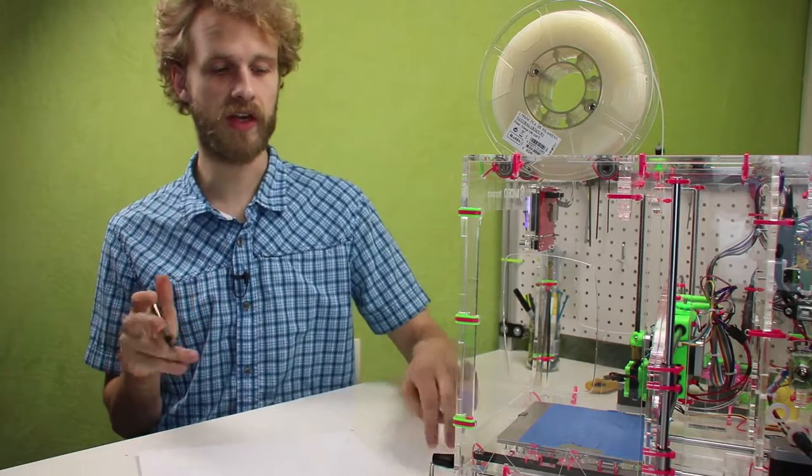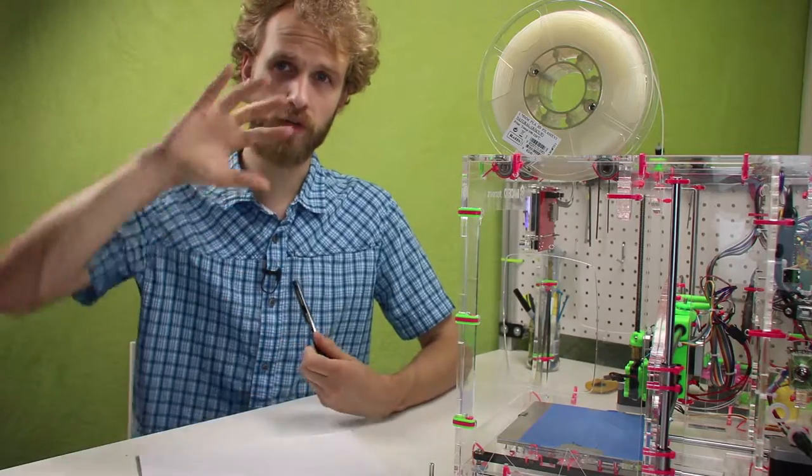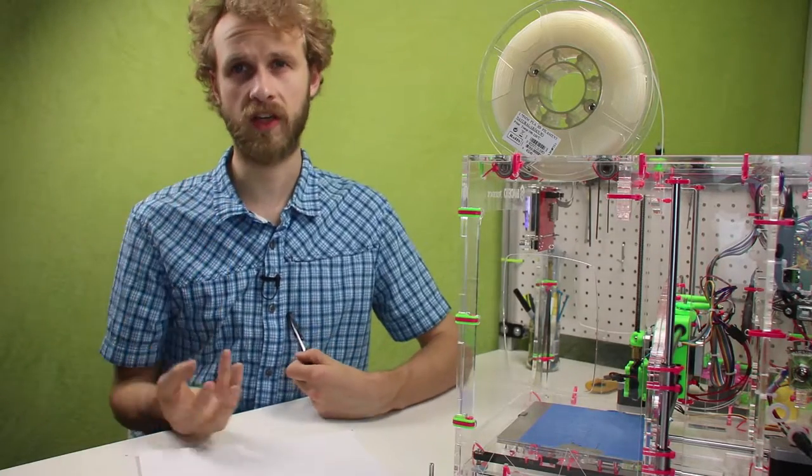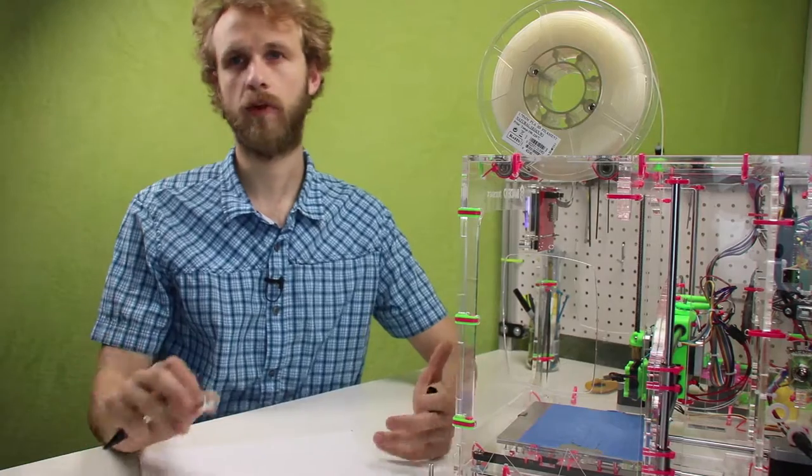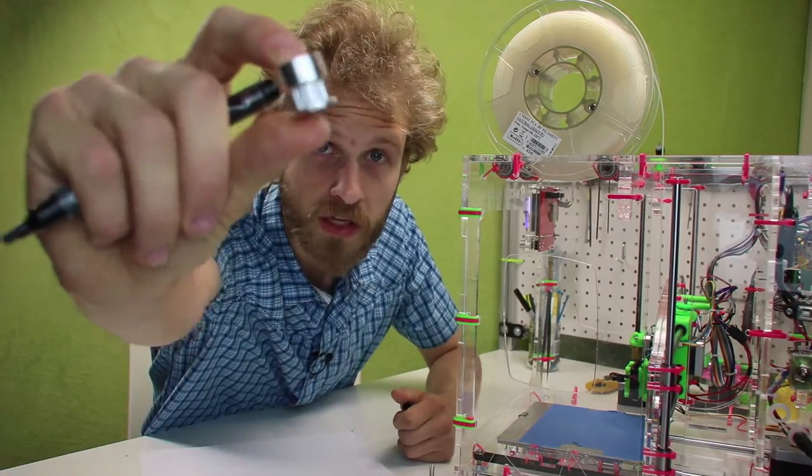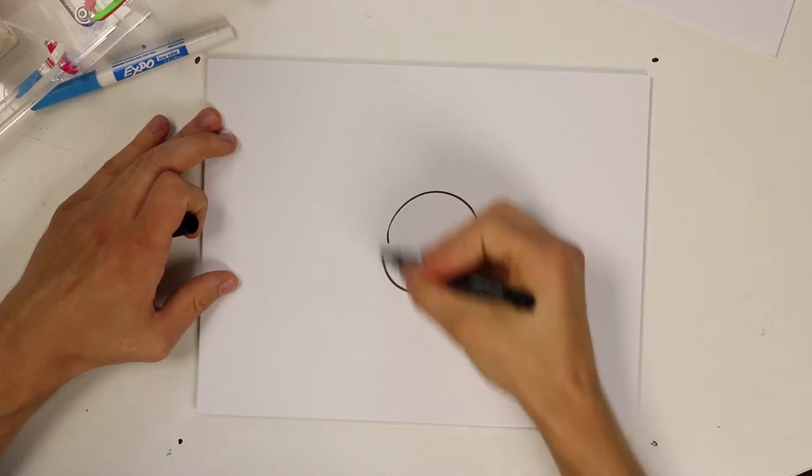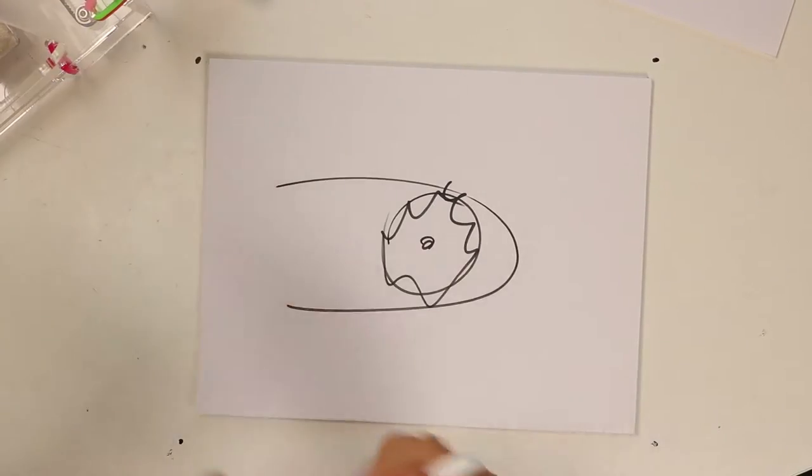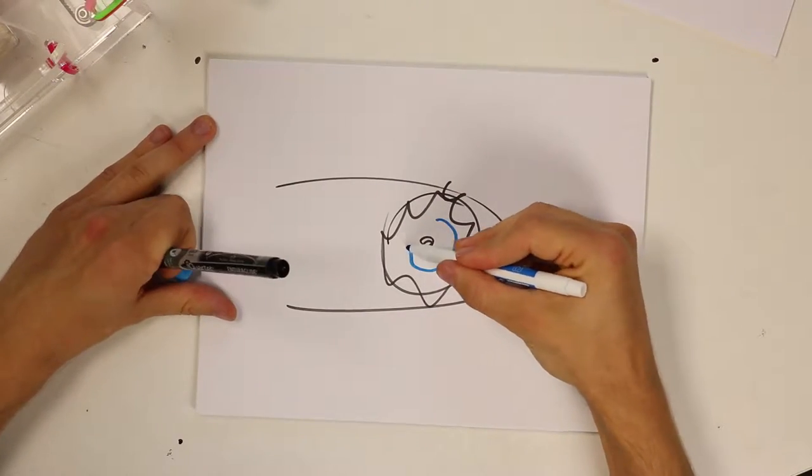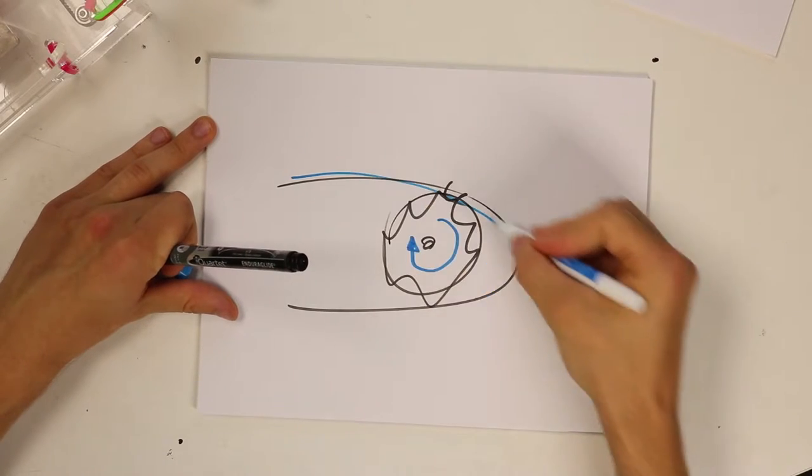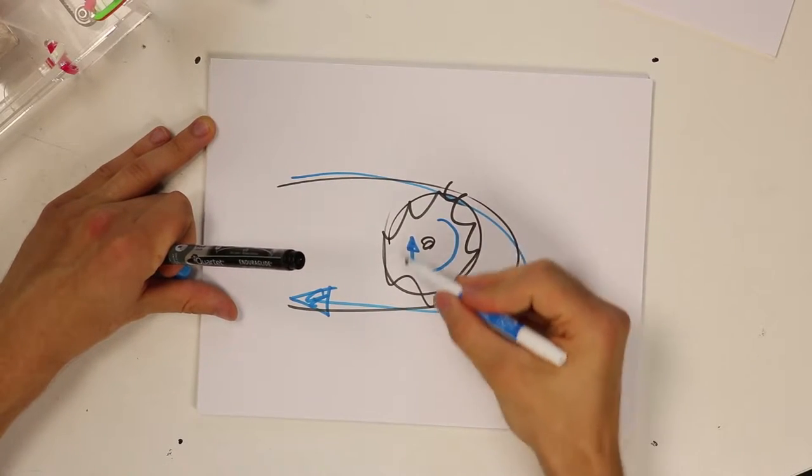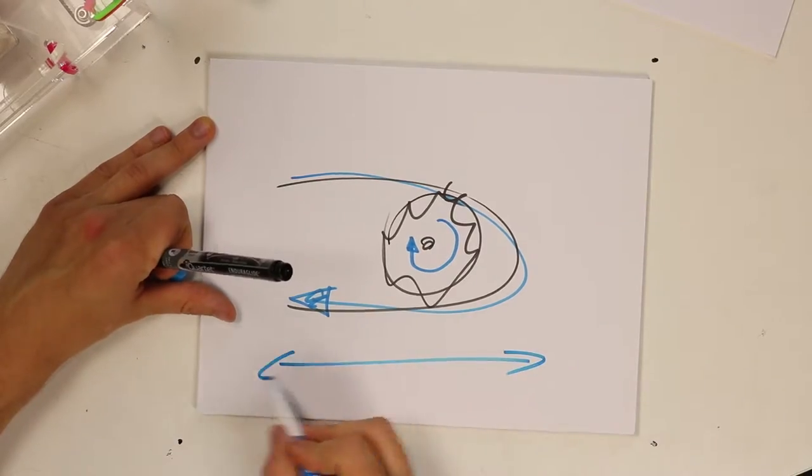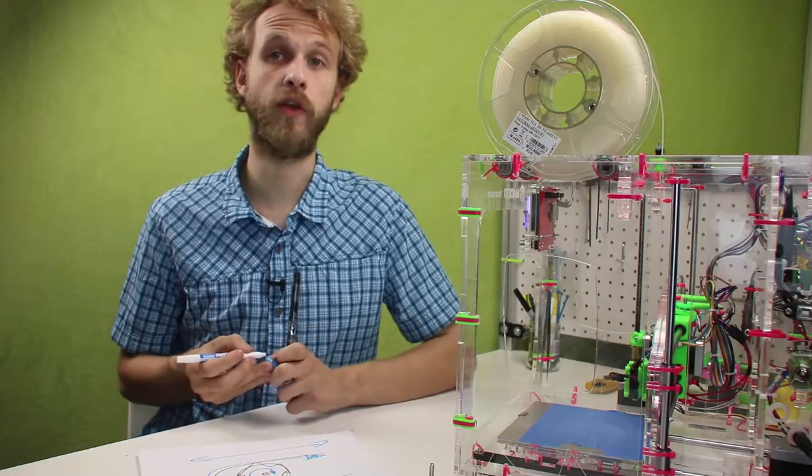Next thing we have to look at is how does the rotational motion of the motor translate into linear motion on the printer. For example, on X and Y axis, we have these pulleys with belts wrapped around them. That's a pulley and that's a belt. As the pulley rotates, the belt gets wrapped around and thus the rotational motion translates into linear motion. So far, so good.